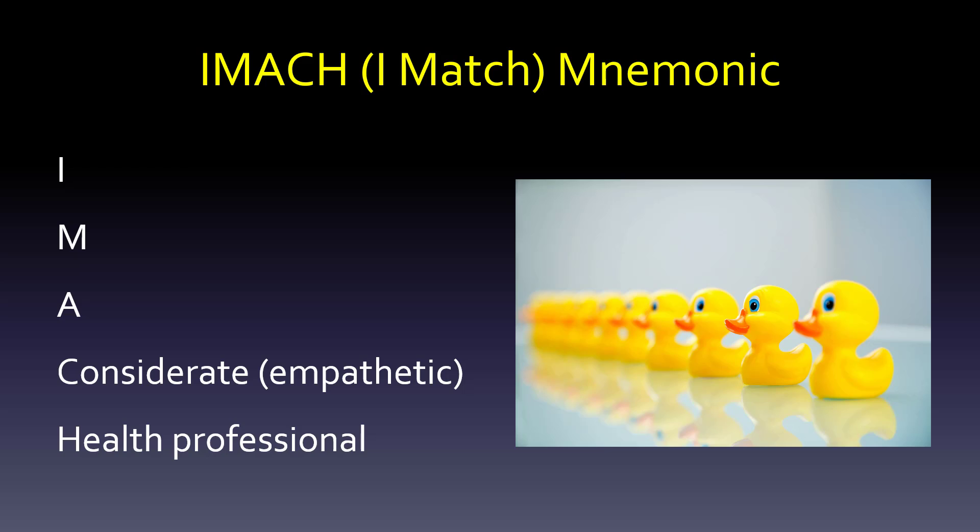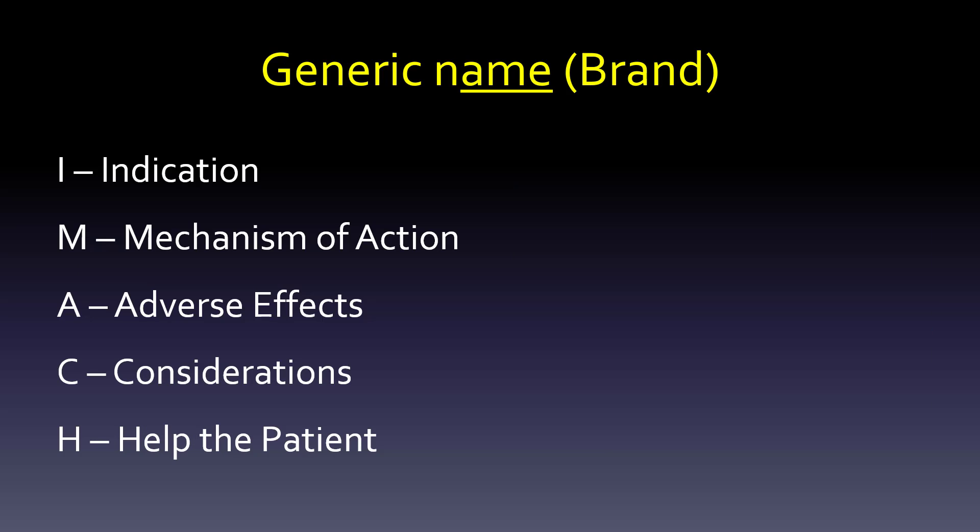Our organizing mnemonic as we go through these medications is: I AM A Considerate Health Professional. Considerate really stands for considerations and contraindications. We list the generic name, then brand name, underline any stems. I is for indication, M is for mechanism of action (which can just be the drug class), A is for adverse effects, C is for considerations, and H is for how to help the patient take their medication.